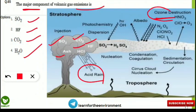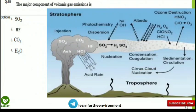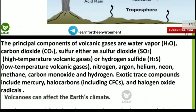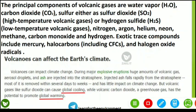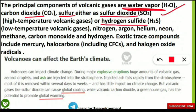Volcanic gas emissions are released in the region between the stratosphere and troposphere — this is also a frequently asked point. The correct answer for the major component is water vapor, which has the maximum concentration. It is followed by carbon dioxide, then sulfur — released as sulfur dioxide (SO₂) at high temperatures and as hydrogen sulfide (H₂S) at lower temperatures.